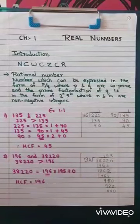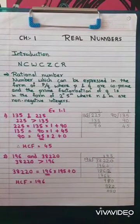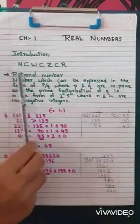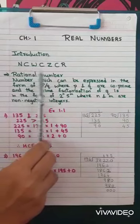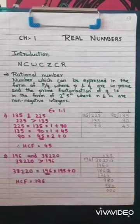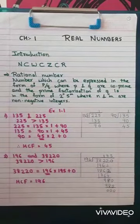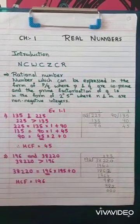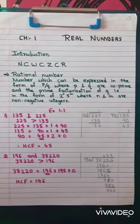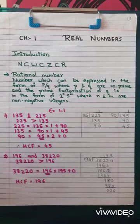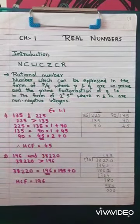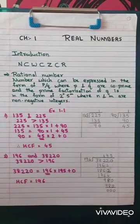Children, as you all have learned about real numbers, you have learned about natural numbers, whole numbers, integers, rational numbers, irrational numbers and real numbers. N stands for natural numbers. Natural numbers start from 1 and go to infinitely many. Similarly, for whole numbers, the smallest whole number is 0 and the largest is infinitely many.